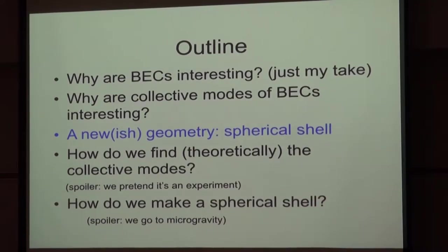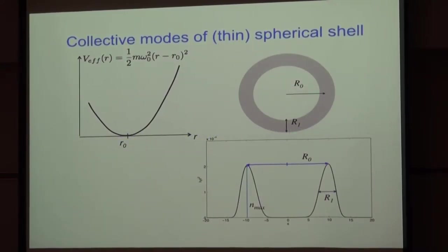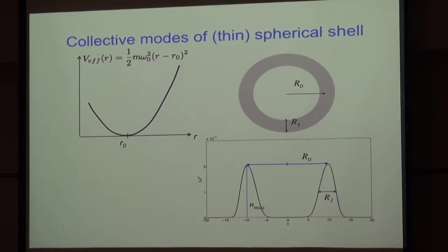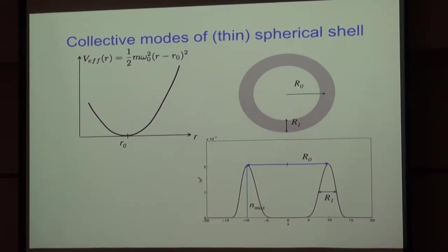One way of saying it is: it's a spherical shell. This is just a 2D cut — it's not actually a ring. It's a full sphere, but it's hollow in the center. One way to make that would be to create a harmonic trap whose radius was offset, so the minimum of the trap is actually out at some finite radius. The condensate wants to collect there, all the way around in the full sphere, and then it's hollow at the center. I'm going to keep drawing it in a 2D cut, but I want you to picture the full 3D sphere.